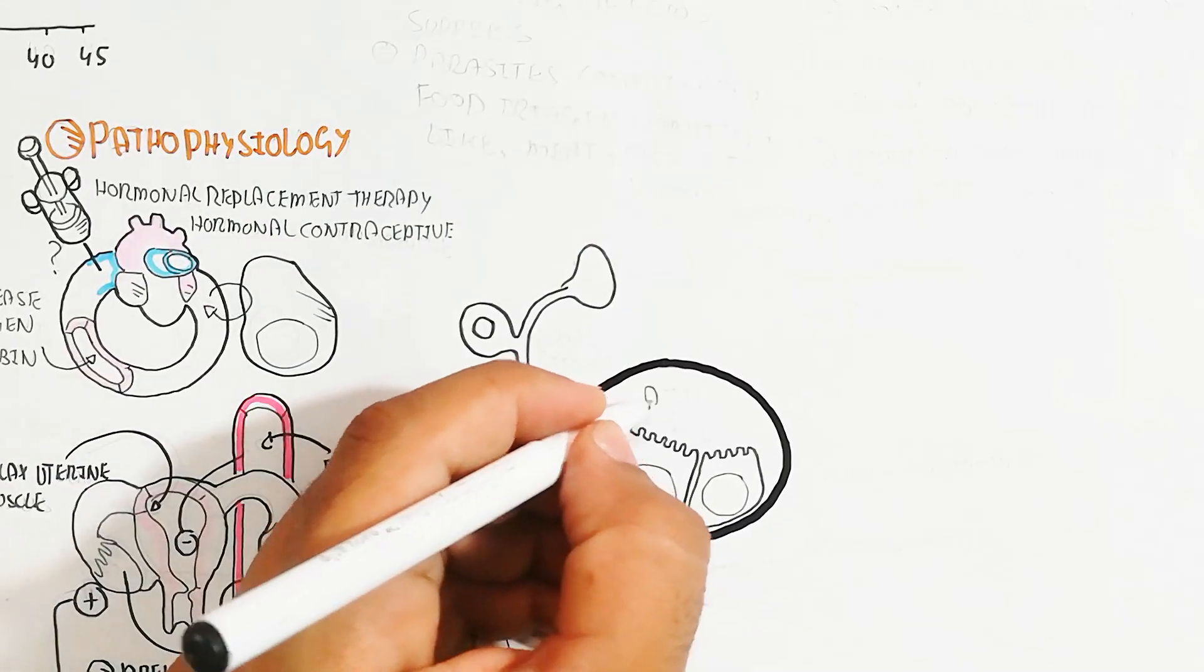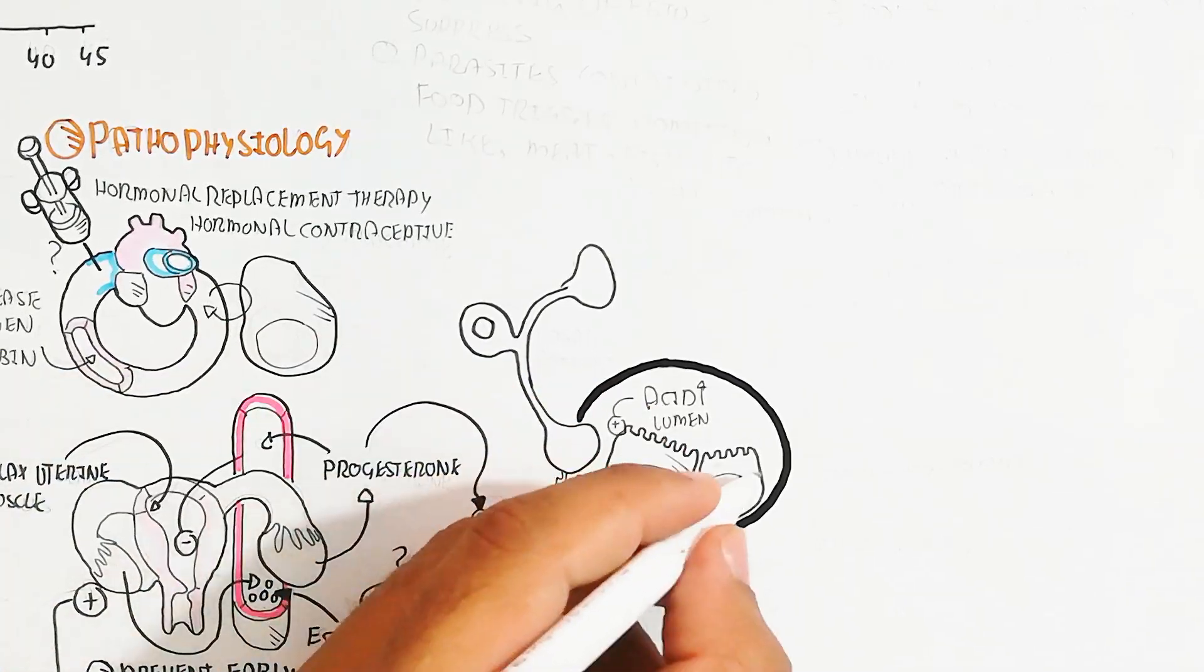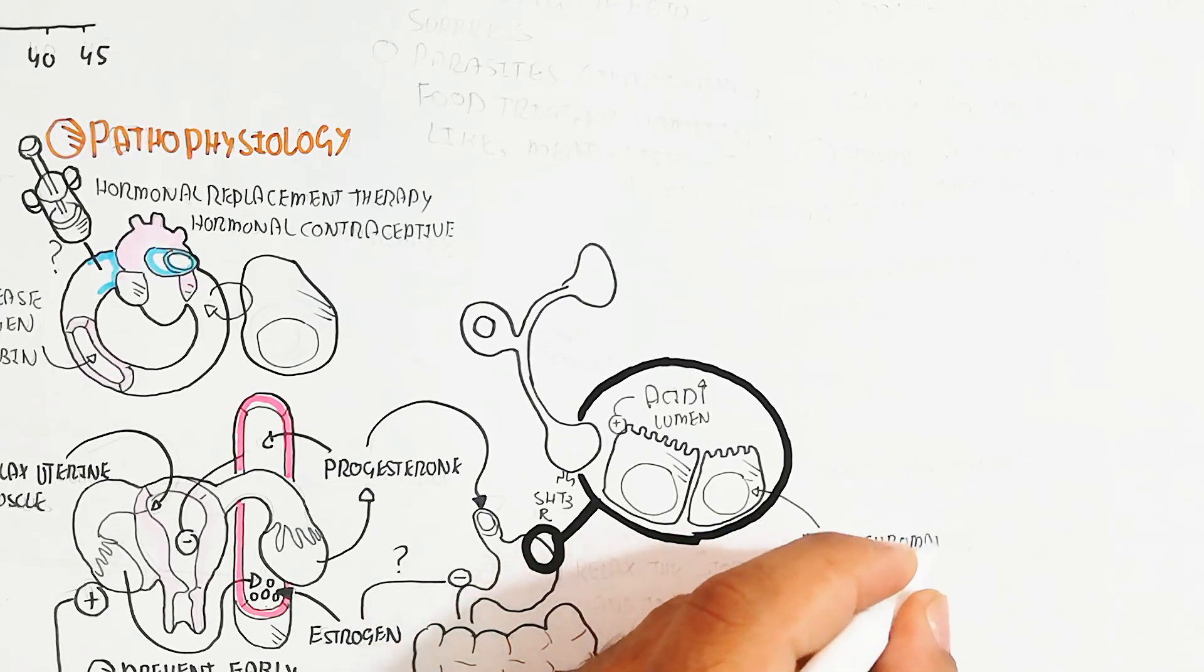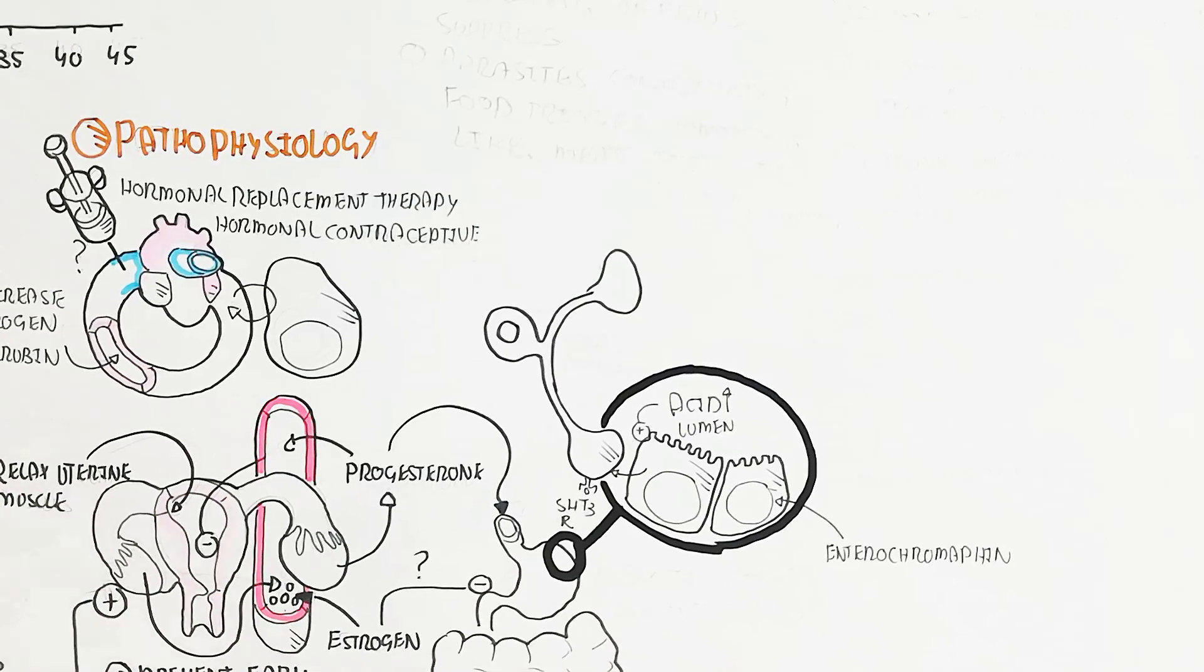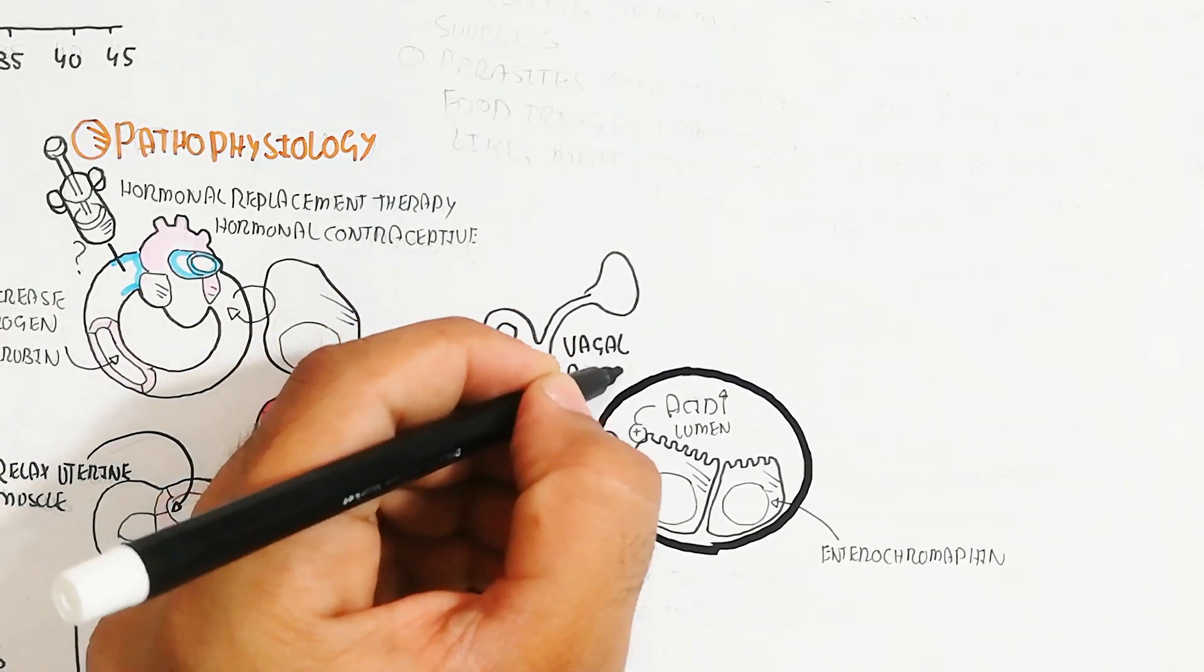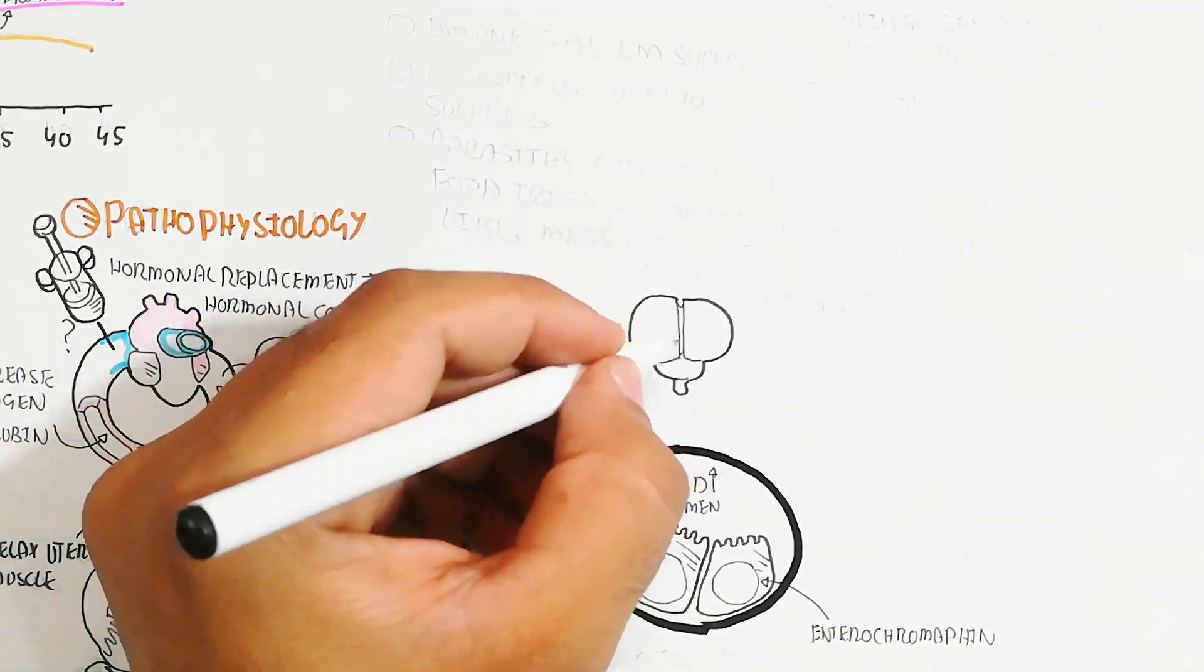Estrogen and progesterone will lead to relaxation of the stomach smooth muscle and intestine. In this way digestion will not occur properly. The acid of the lumen will target the enterochromaffin cell, which will release neurotransmitters.